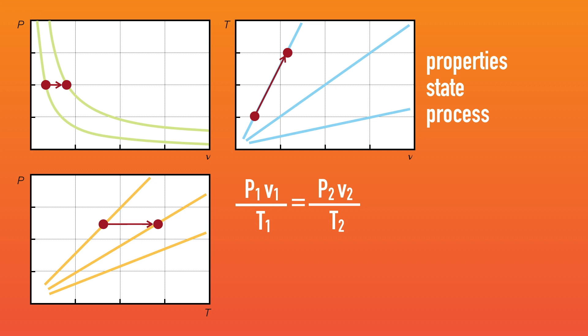Let us continue and go through an expansion process — an isothermal expansion process in this case. The equivalent processes can be mapped to other charts. Notice the increase in specific volume associated with this expansion. Next, how about we cool the gas while maintaining a constant specific volume back to the original temperature.